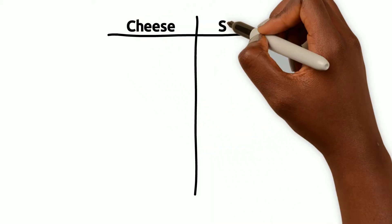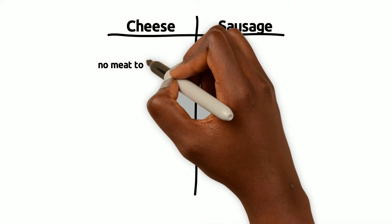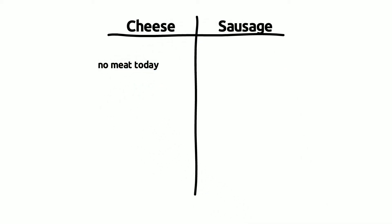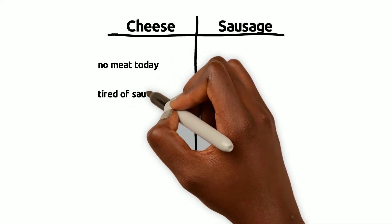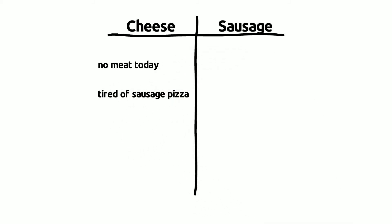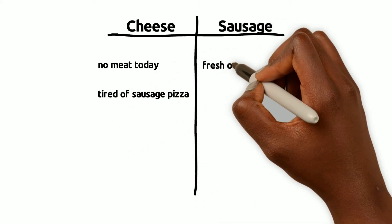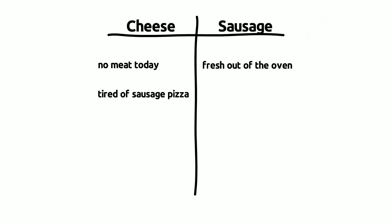What might those pros and cons be? It could be that you generally do meatless Fridays, and today is a Friday. It might be that you had sausage pizza yesterday and you're looking for something different. It could simply be that you saw the sausage pizza come right out of the oven, and the cheese pizza looks like it's been sitting there longer.